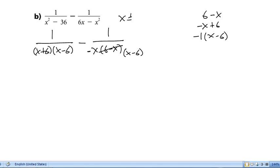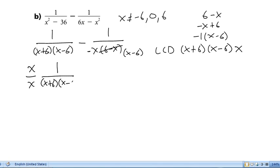Now we should be able to easily see that our non-permissible values are negative 6, 0, and 6. And, our lowest common denominator is x plus 6 times x plus 6 times x minus 6 times x. So our first term, we'll have to multiply by x plus 6 over x plus 6.